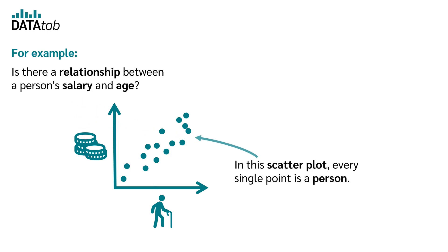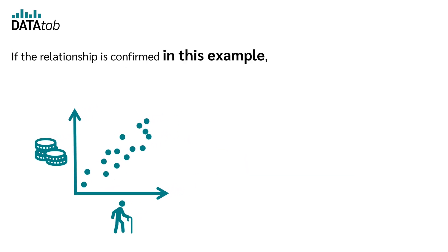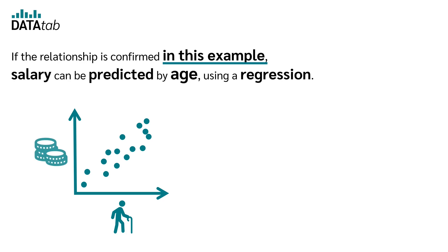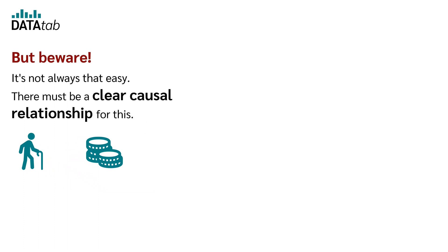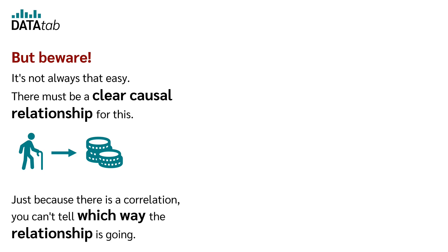In this scatterplot, every single point is a person. If the relationship is confirmed in this example, salary can be predicted by age using a regression. But beware, it's not always that easy. There must be a clear causal relationship for this. Just because there is a correlation, you can't tell which way the relationship is going.